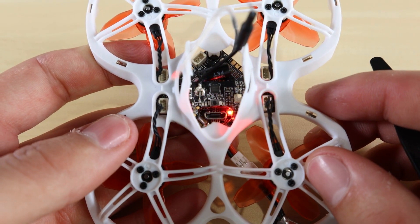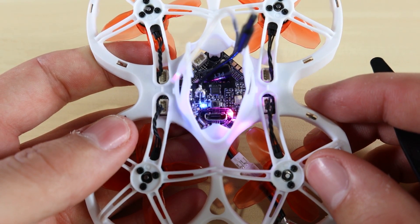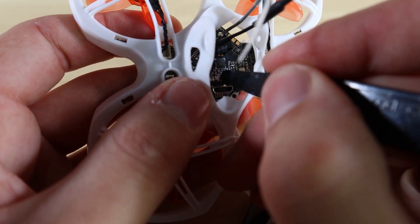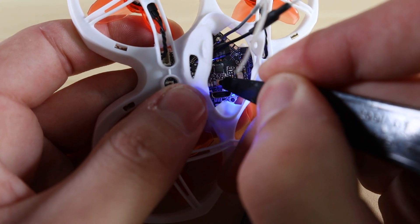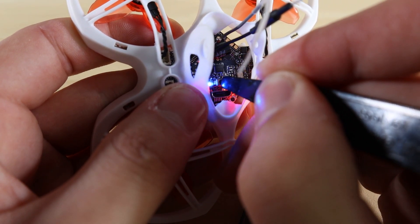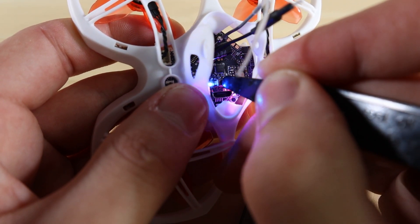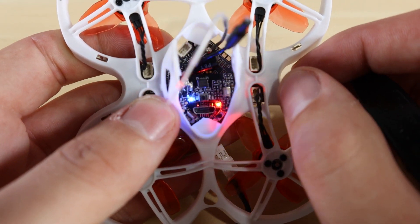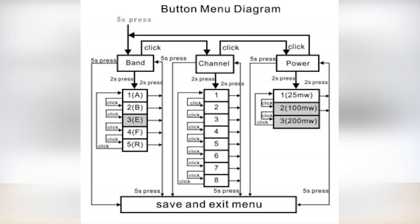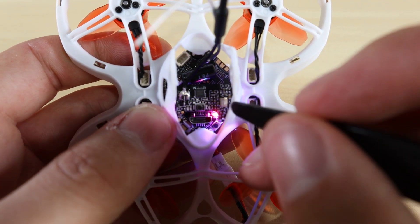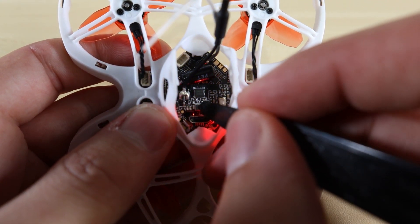When using the button to set your band, channel, and power, hold it down for a couple of seconds. A blue light will come on indicating you're in the band setting. Hold the button down again and the blue light will start flashing — the number of flashes indicates which band you're on. You can check the manual at the knowledge base for a chart showing which flash count corresponds to which band. Right now it's flashing four times, indicating the Fat Shark band, which I'm fine with.